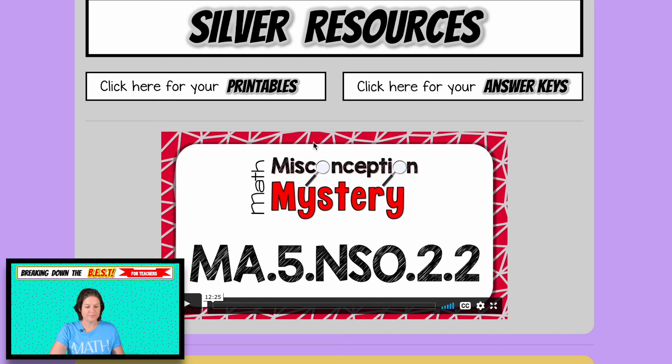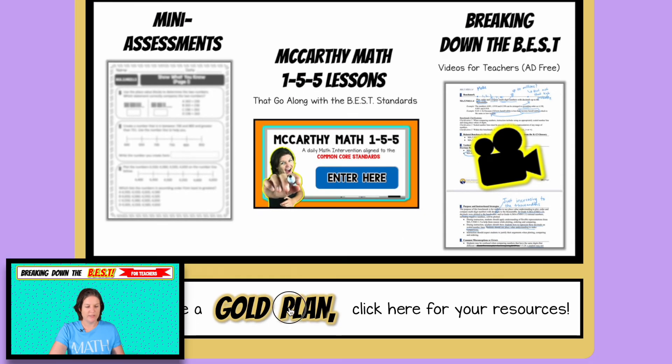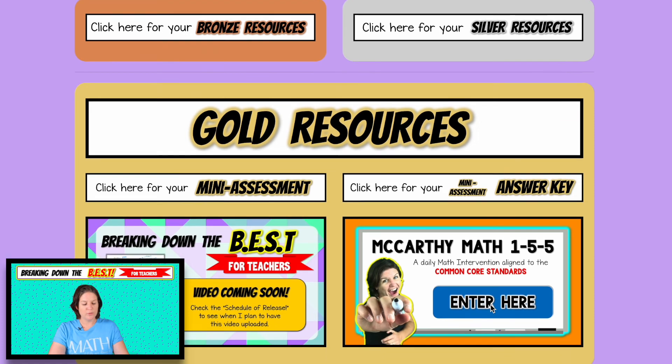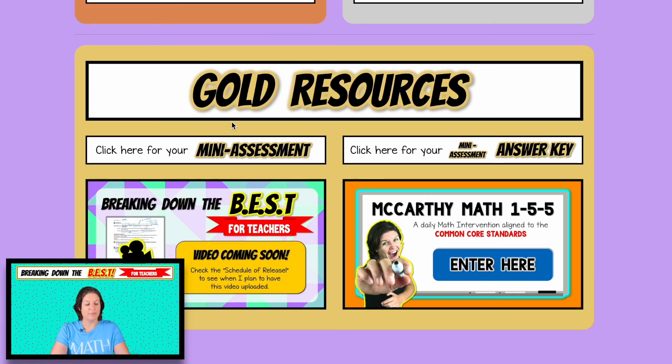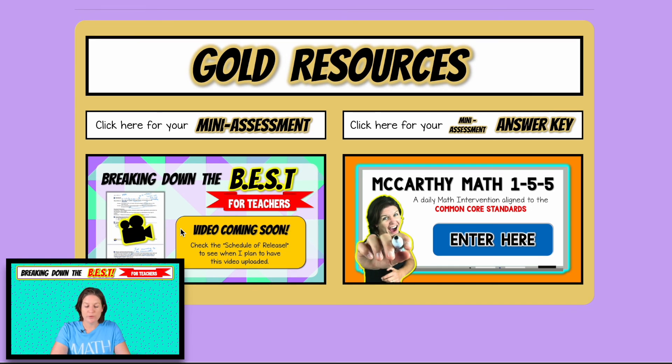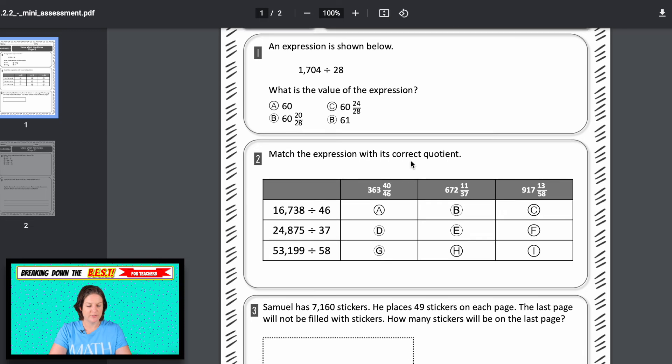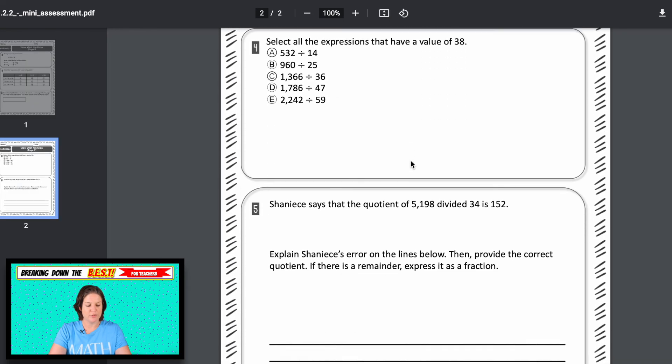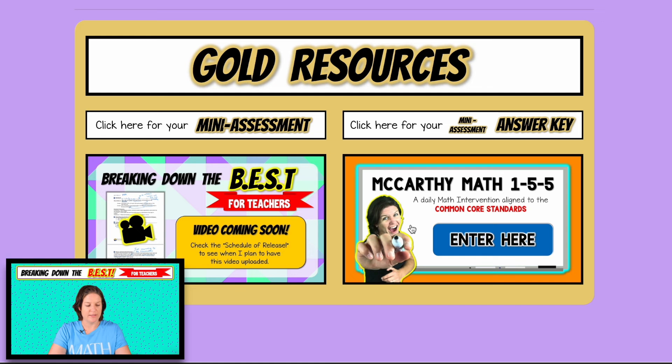Here's your answer keys there. And then if you have the gold plan and you click here, the page will load and you have access to everything. You've got the bronze, the silver, and then you have the mini assessment and McCarthy math 155. You also have a little bonus perk of getting these videos without any ads. You can just watch them right here with the resources. That's a nice little perk, but the main bulk of having the gold membership is these two resources here.